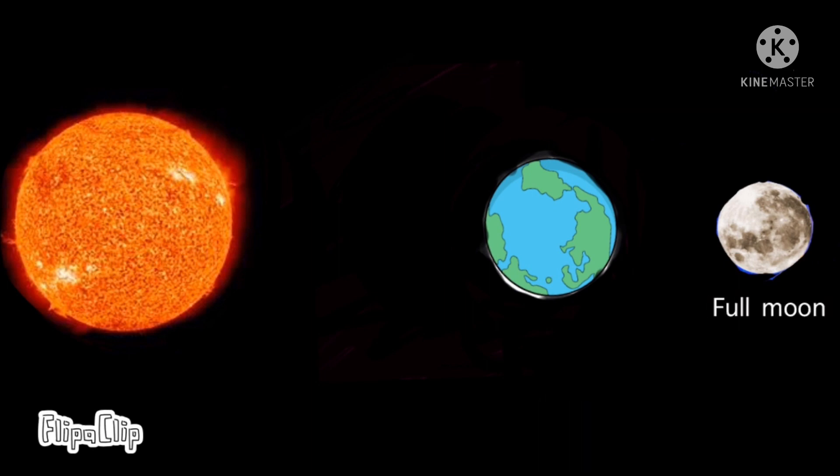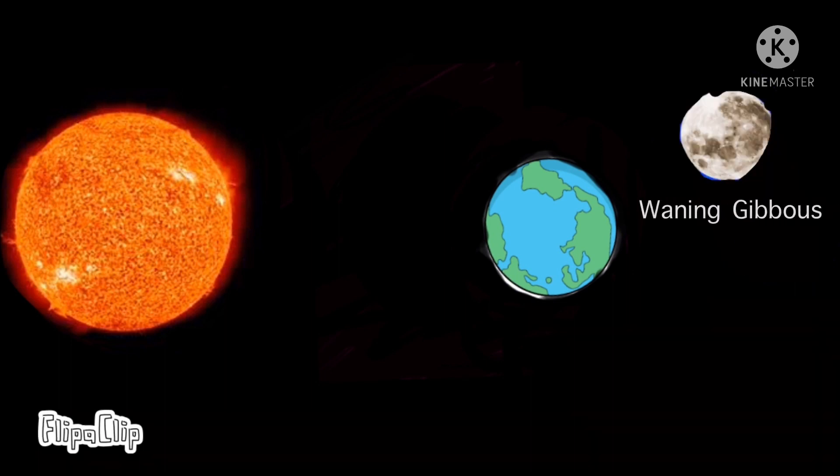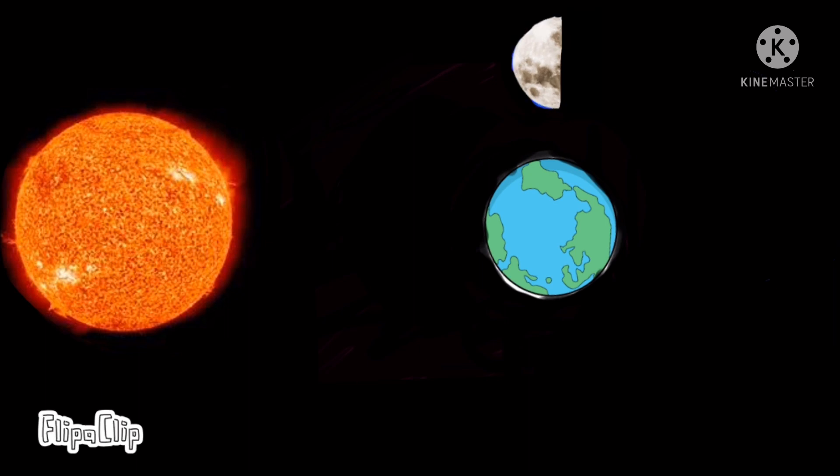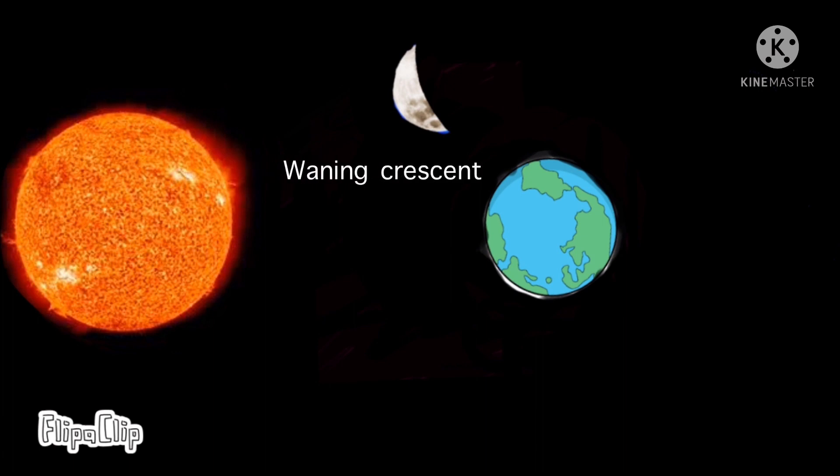The first phase is the full moon. From here, the moon starts shrinking. Waning gibbous, first quarter, waning crescent.